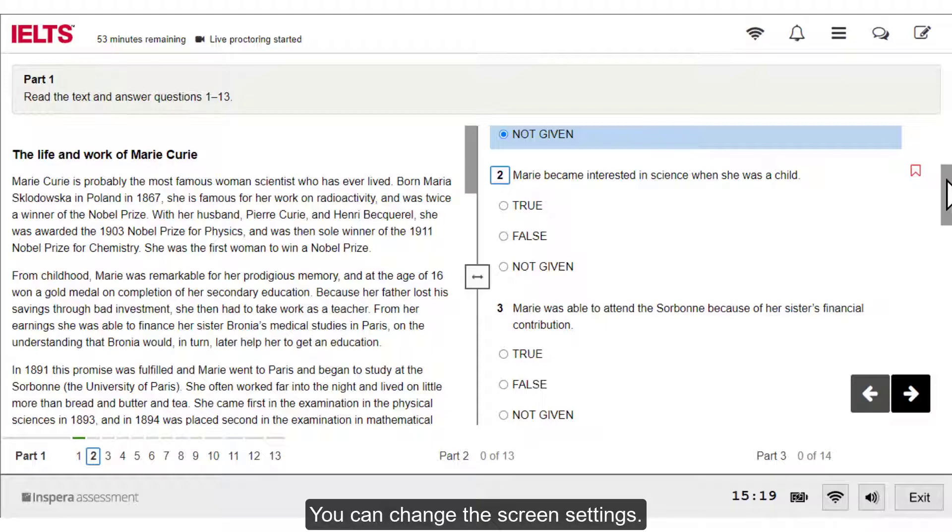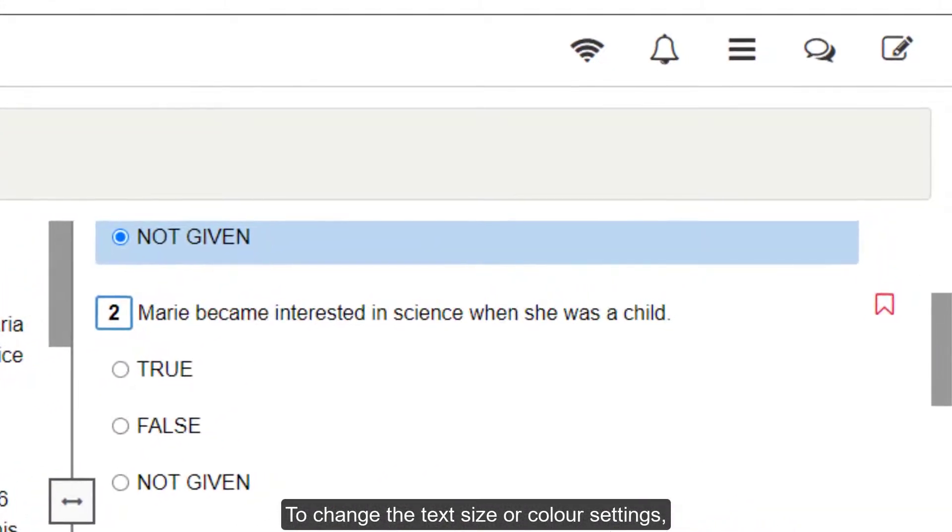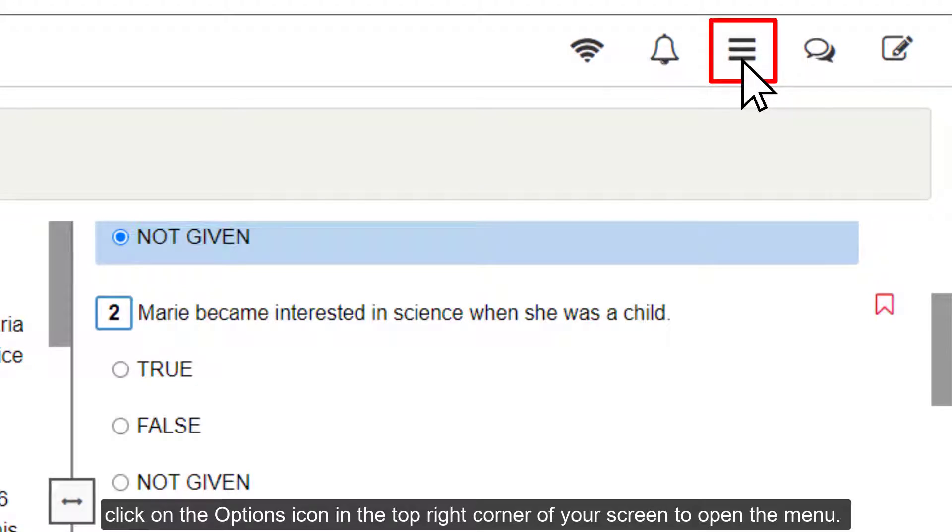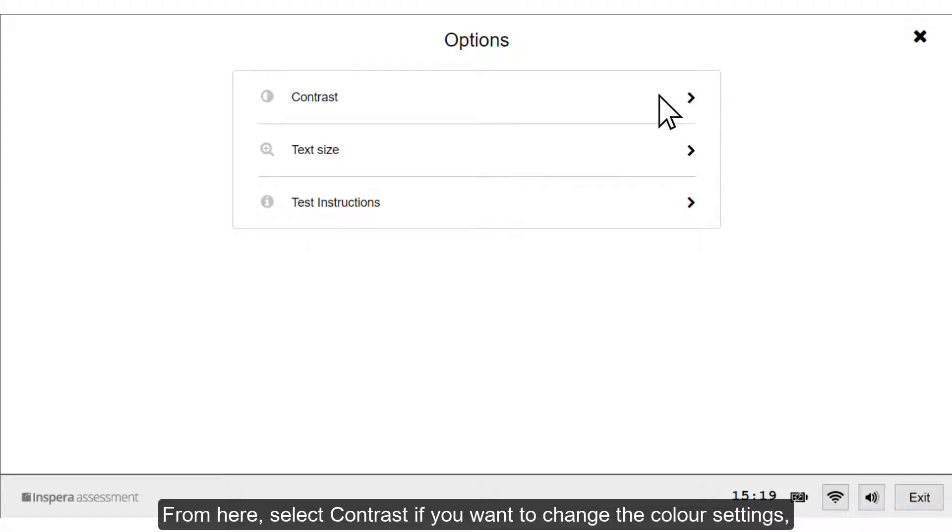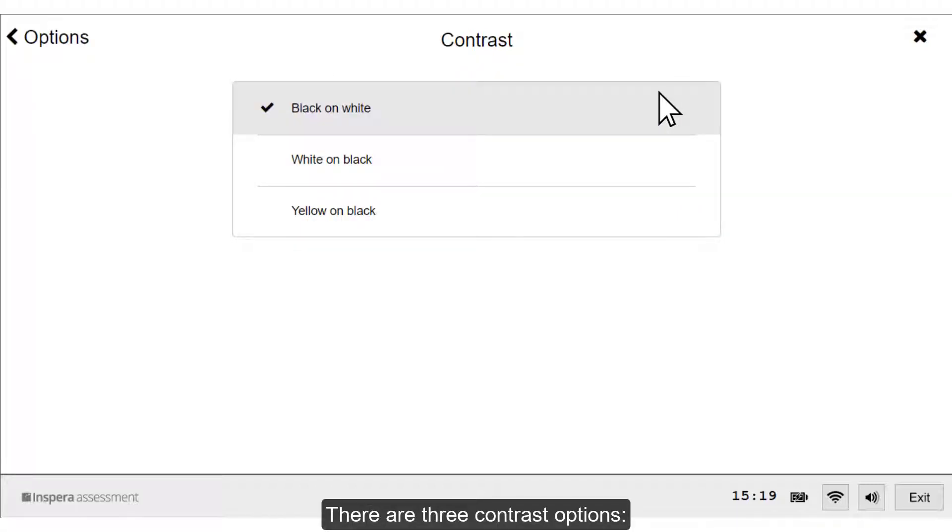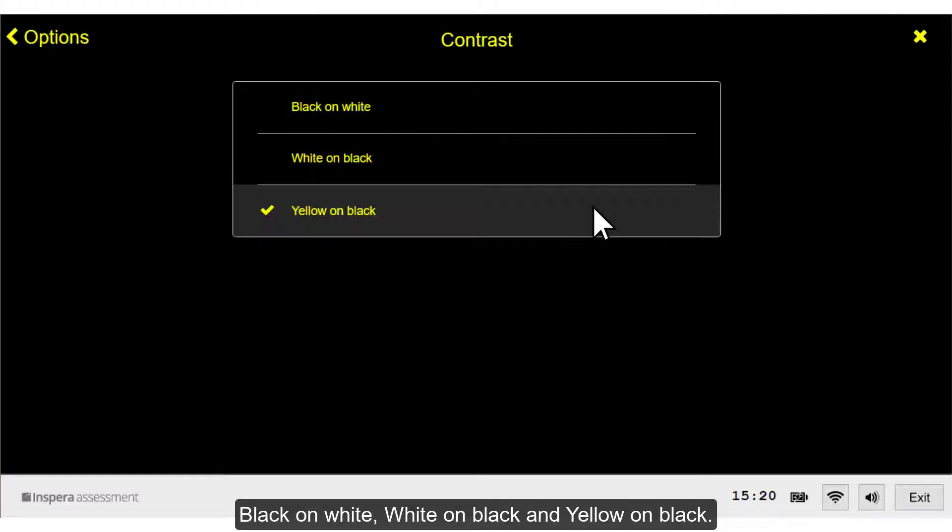You can change the screen settings. To change the text size or color settings, click on the options icon in the top right corner of your screen to open the menu. From here, select contrast if you want to change the color settings or select text size to change the size of the text. There are three contrast options: black on white, white on black, and yellow on black. Click on the option you would like.